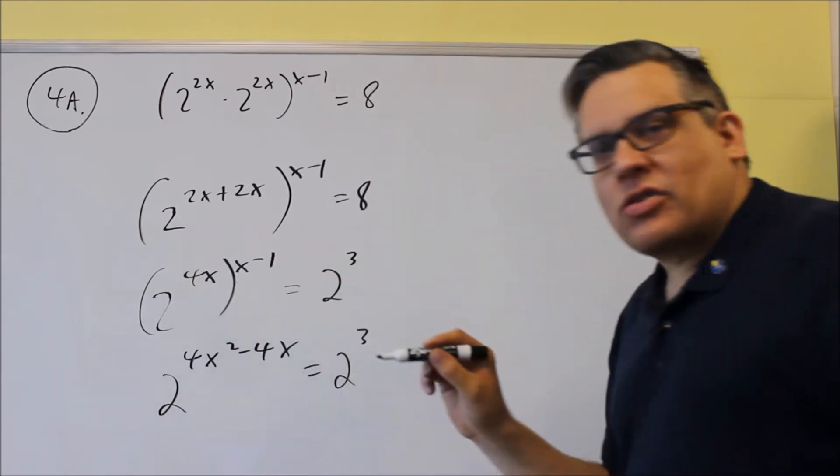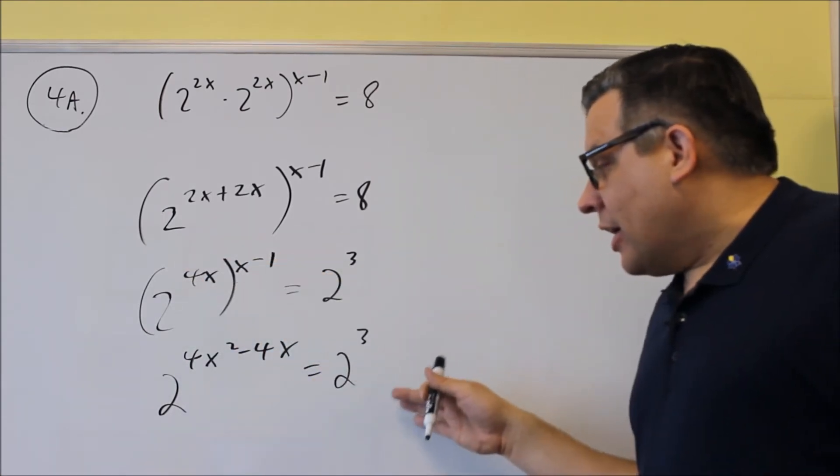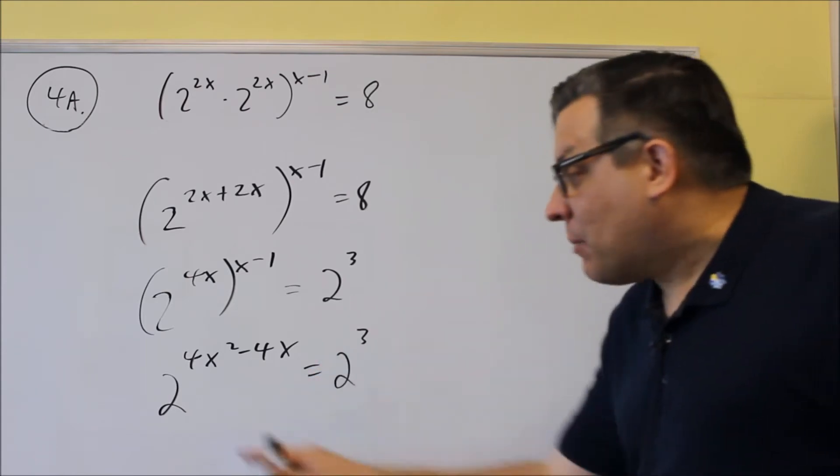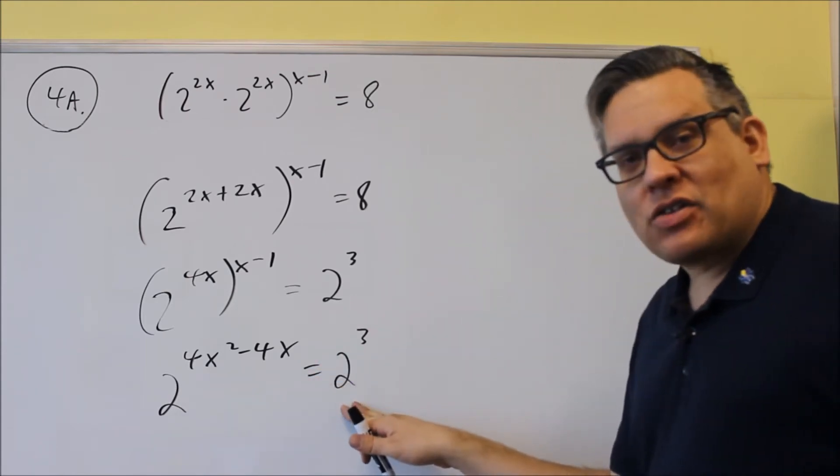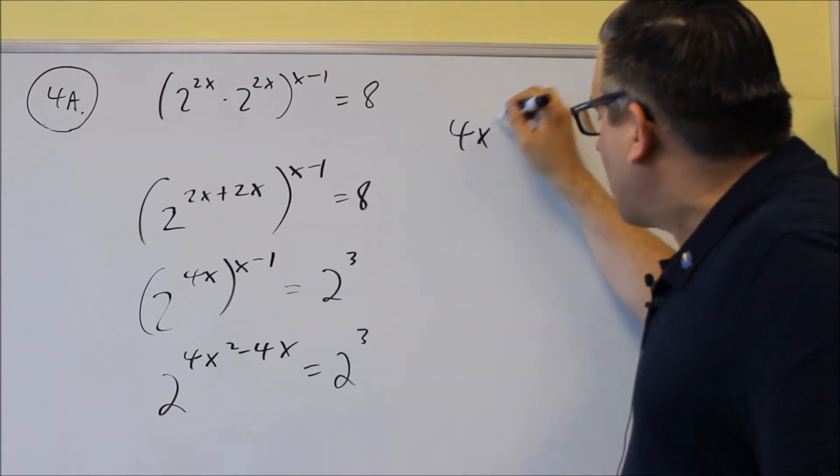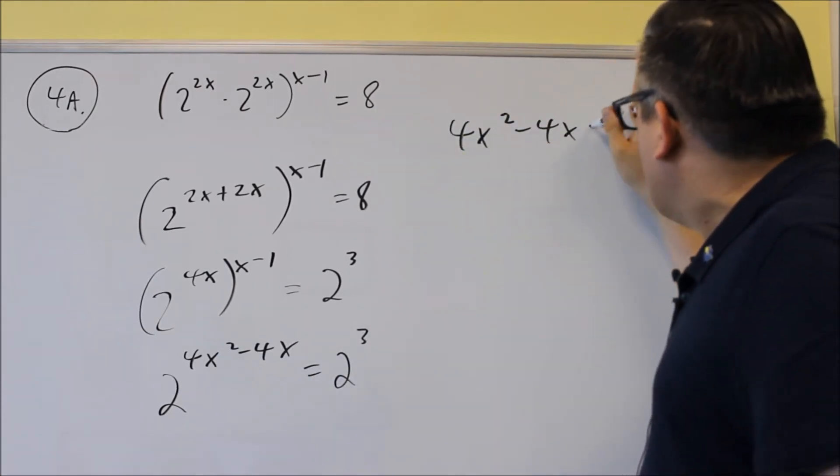So you want to make sure you clear out the parentheses first, and then once you get done with that, now we're ready to use the equal bases property. Since both the 2's are now the same, we can now set the exponents equal, so we're going to do 4x squared minus 4x equals 3.